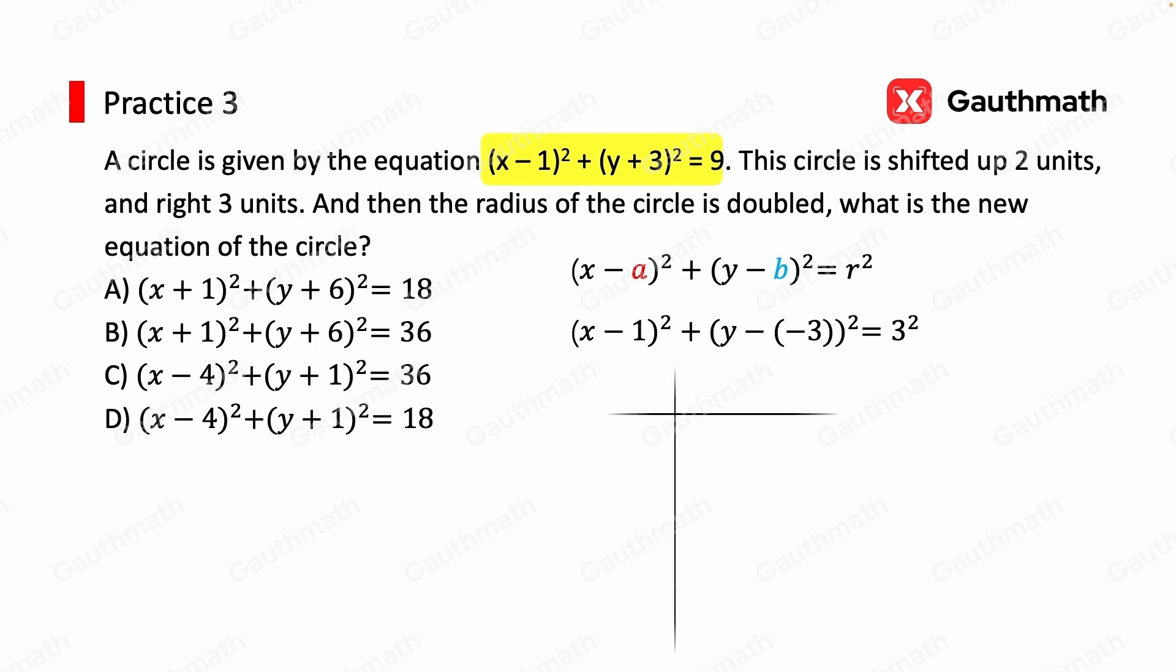Now I'm going to make a sketch to help me visualize what is going on. A circle centered around 1, negative 3. That's the center. And the radius is 3. That's our circle.